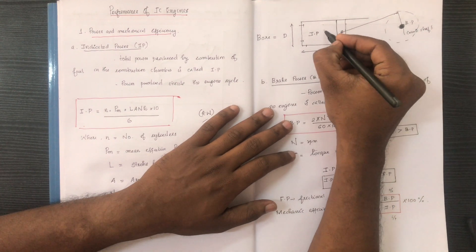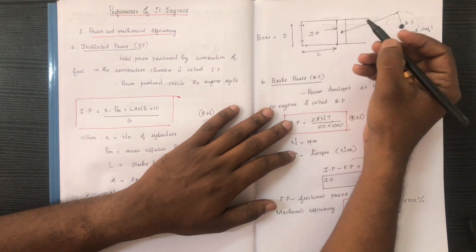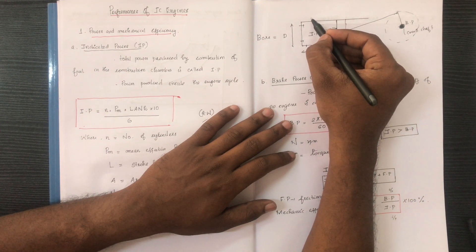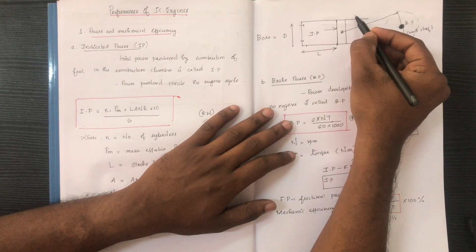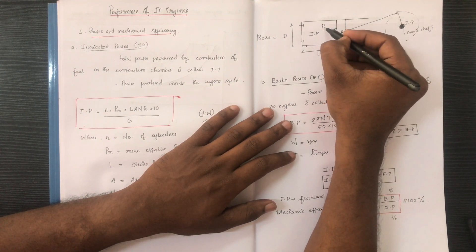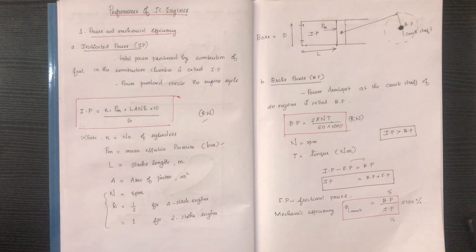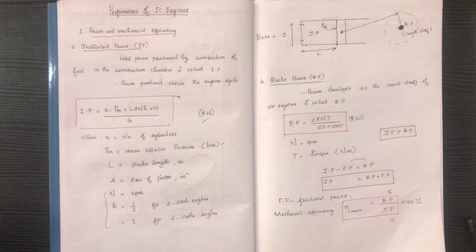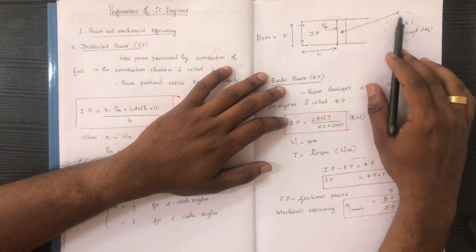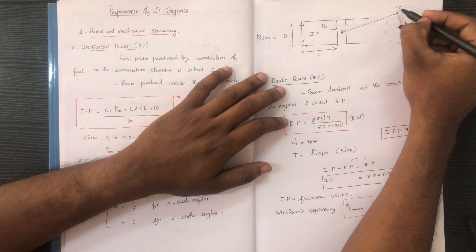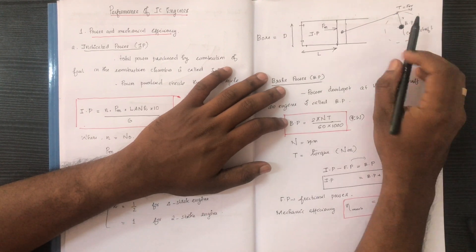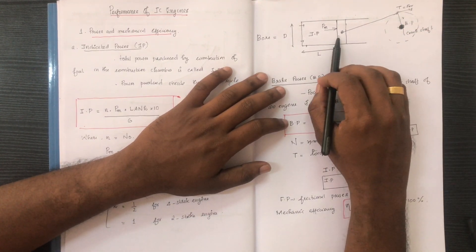Mean effective pressure is a hypothetical pressure. We are going to show the expansion stroke and the piston. This piston is subject to a hypothetical constant pressure. The pressure force acts on the piston, and the torque T_m is produced by the tangential force multiplied by the radius R.